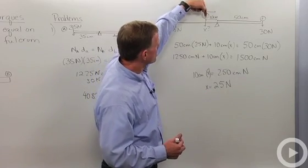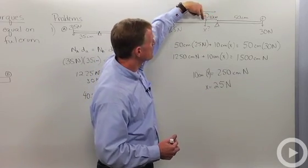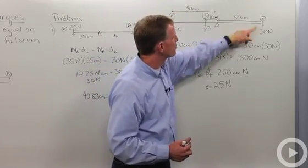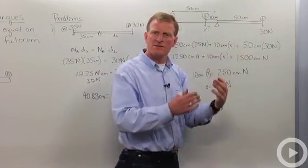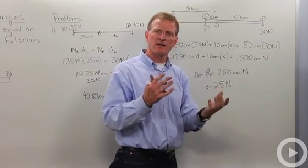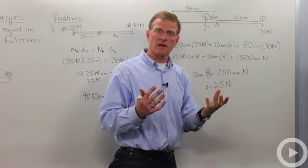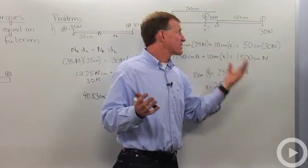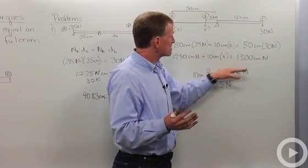This person can be applying 25 newtons, 10 centimeters, along with this person, and that will equal a 30 newton force that's 50 centimeters away. So this is an example of solving a more complicated balanced torque equation. But it's simply just adding the different torques together and knowing that they're balanced, I can solve it very easily.